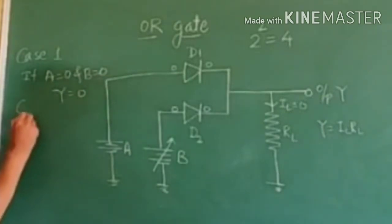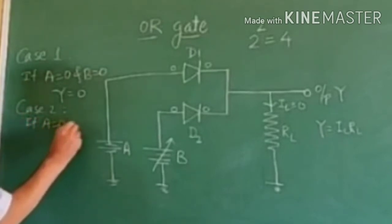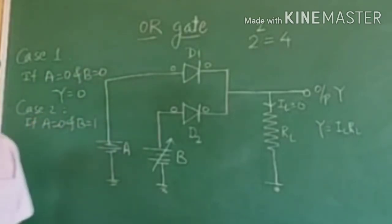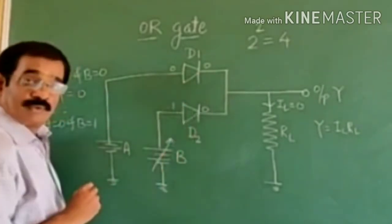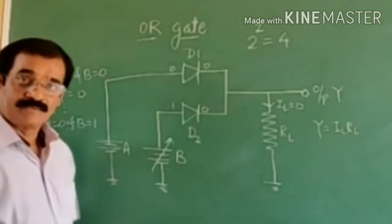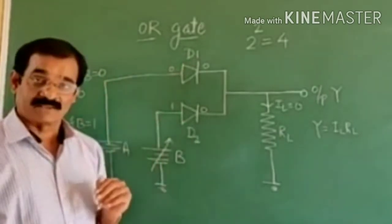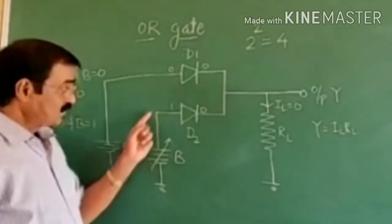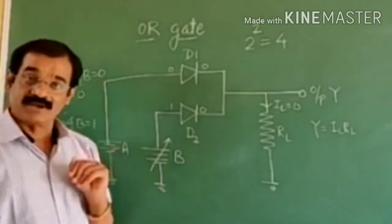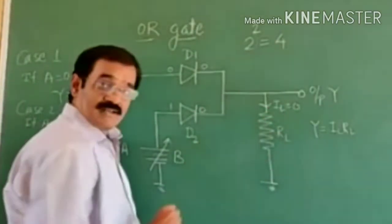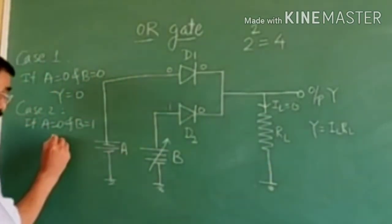Consider Case 2: if A is 0 and B is 1. Then there is a high voltage at the anode of diode D2 and low voltage at the anode of diode D1. So diode D2 becomes forward biased while diode D1 remains reverse biased. Hence current flows through diode D2 and through load resistance R1, and no current flows through D1. As IL is not 0, therefore Y is also not 0 — that means Y is 1.